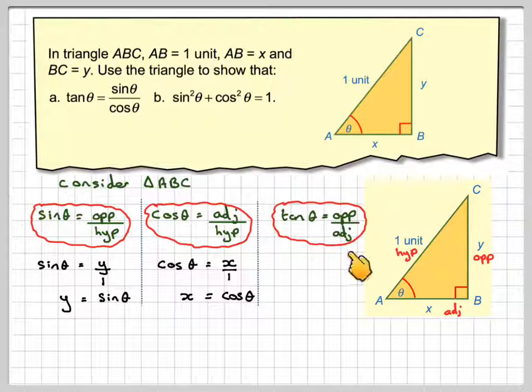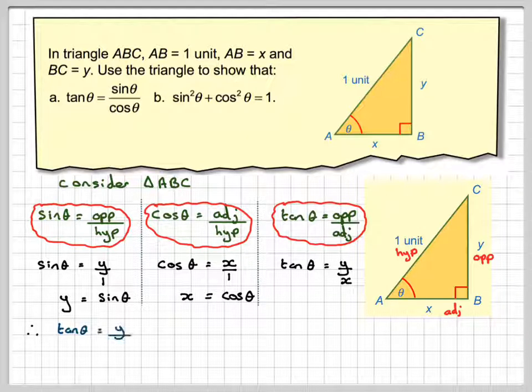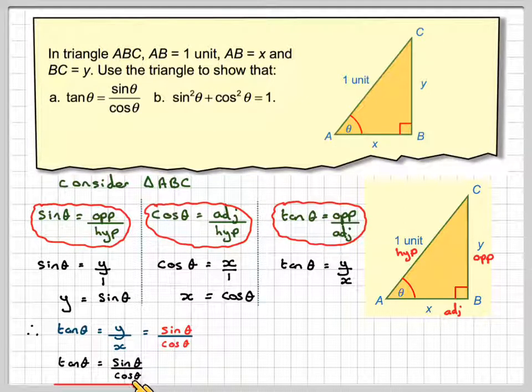Tan θ is opposite over adjacent, so that will be y over x. Tan θ is y over x from here, but y is equal to sin θ and x is equal to cos θ, so it's going to be sin θ over cos θ. So we've shown that tan θ is equal to sin θ over cos θ. It's worth learning that, even if it's in the formula booklet.